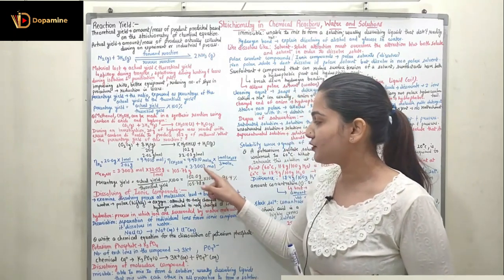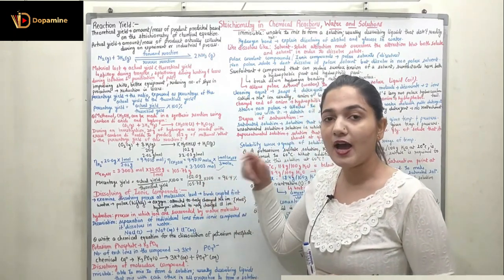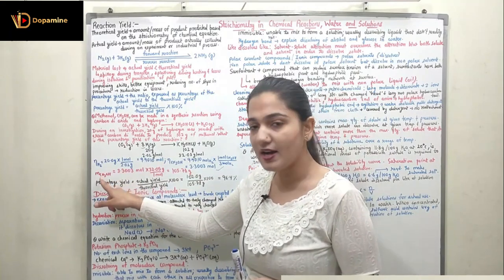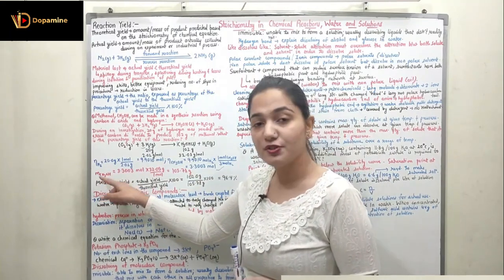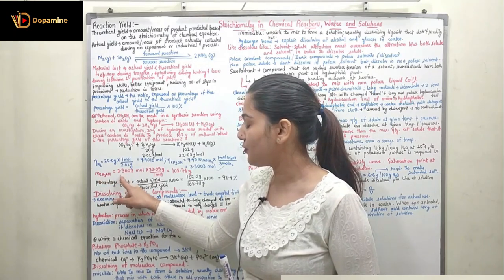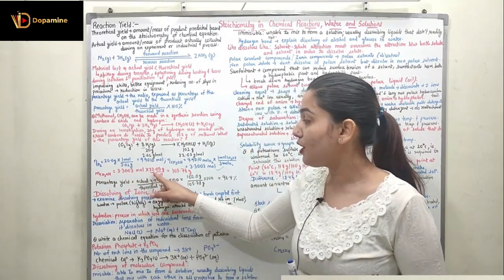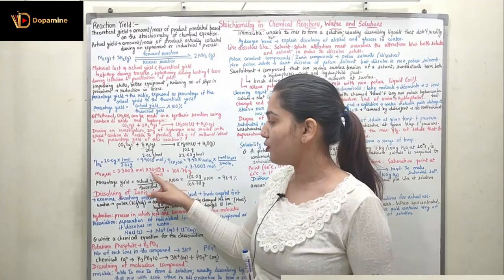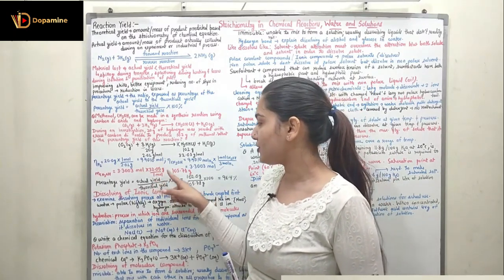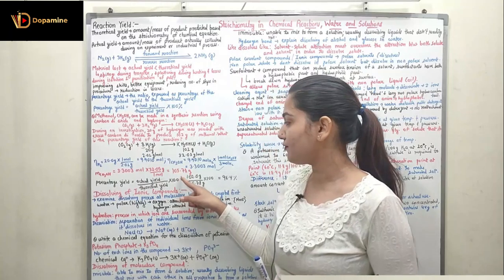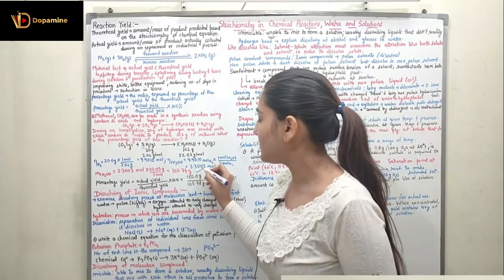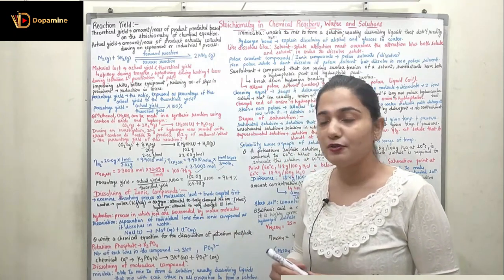From 3.3003 mol of CH3OH, knowing the number of moles and the molar mass, we can find the mass of CH3OH produced theoretically. Mass of CH3OH = 3.3003 mol × 32.05 g/mol = 105.78 grams. This is the amount of methanol theoretically produced.